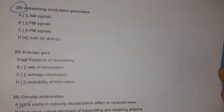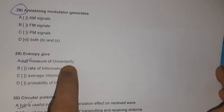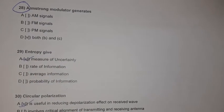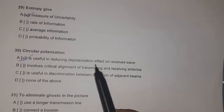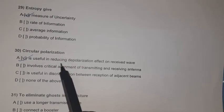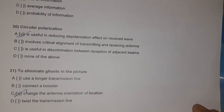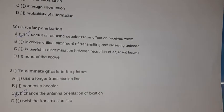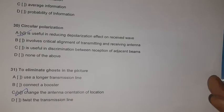Question 29: Entropy is a measure of uncertainty. Question 30: Circular polarization is useful in reducing the depolarization effect on a received wave. Question 31: To eliminate ghost in a picture, change the antenna orientation or location.